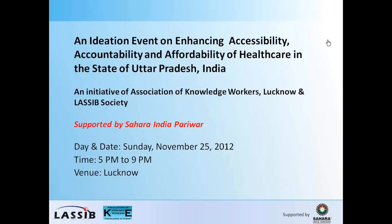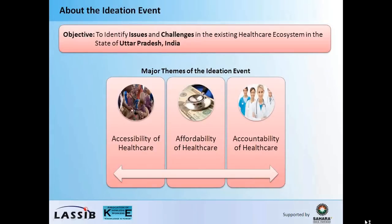I am now going to share with you the slides of the presentation, so I would like you to have a look at slide number 2, which says that the objective of this event is to identify issues and challenges in the existing health care ecosystem in the state of Uttar Pradesh. And the three themes, as we had mentioned to you earlier, are accessibility, affordability, and accountability.